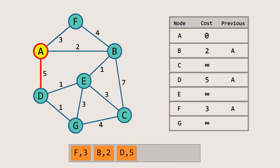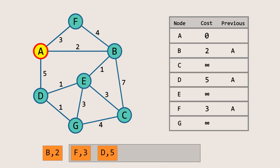Now that all the neighbors of node A have been visited, we need to proceed to another node. We will pop the next element from the priority queue. Since B has the highest priority — i.e., the lowest cost — we will pop it and visit all its neighbors, just like we did with node A, updating the costs and previous nodes in the table if we find any shorter paths.